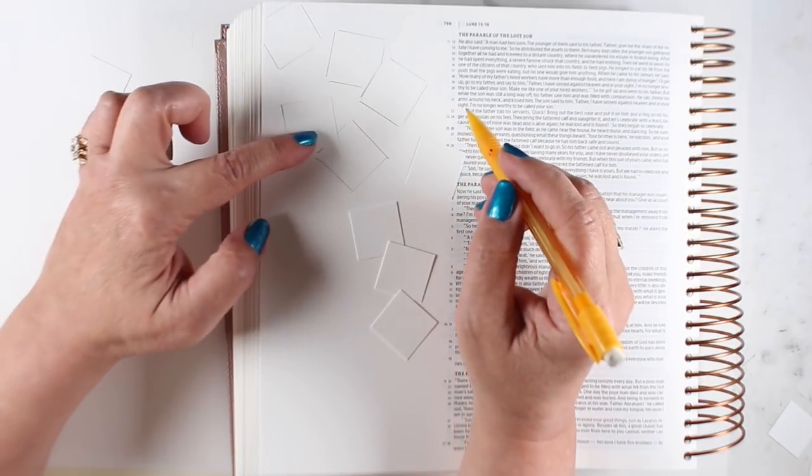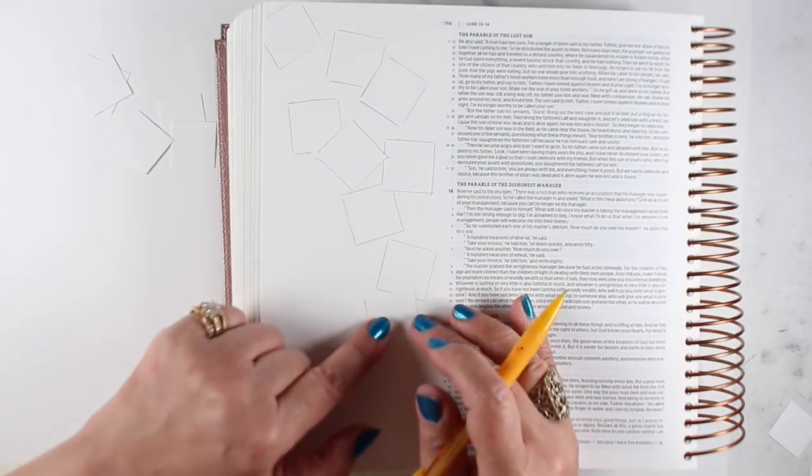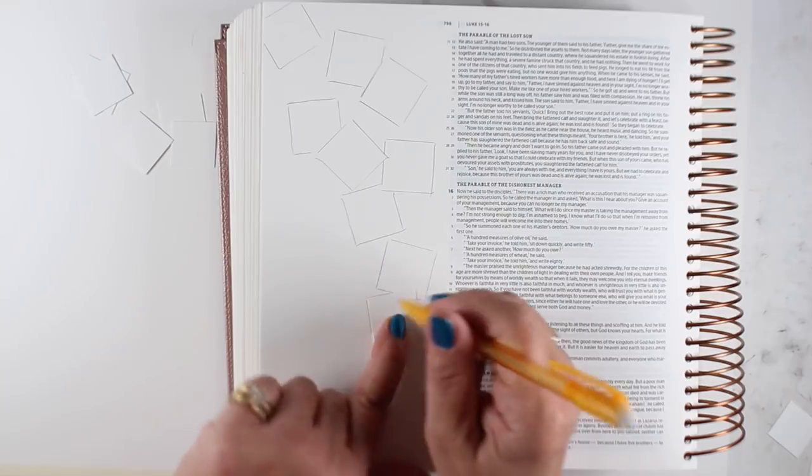Whatever word you want to do, just cut out that number of squares. Kind of toss them in whatever arrangement you want on your page. Leave room for whatever words you want to write aside from that. And I'm just going to make them cascade down the page.